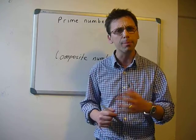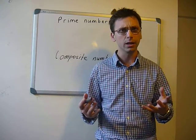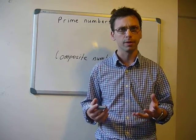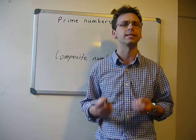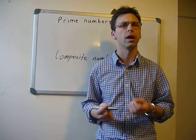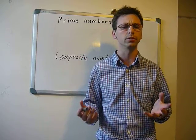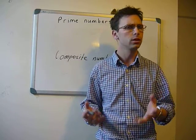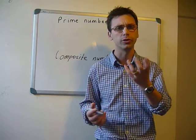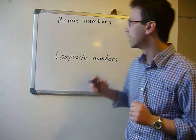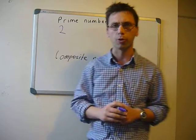Let's go through the number two. The meaning of a prime number is it can only be divisible by itself and one. So two — two times one is two. That's the only factors that can go into number two, so two is a prime number.